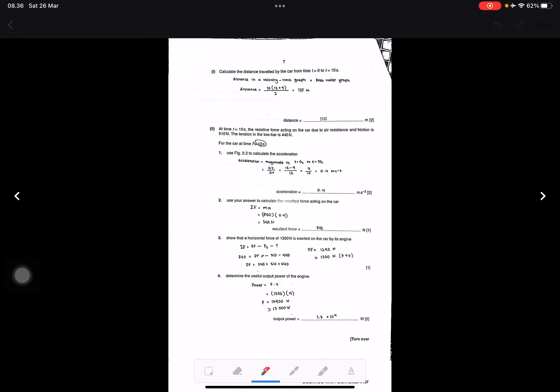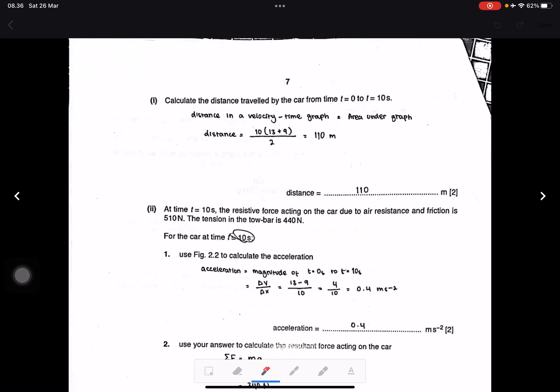Question B(i): Calculate the distance traveled by the car from time zero to 10 seconds. Use distance equals area under the velocity-time graph. Distance equals 10 times (13 plus 9) divided by 2. This is like a trapezium: 10 is time, 13 plus 9 are the two positions. We get 110 meters.